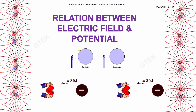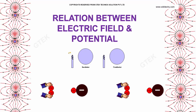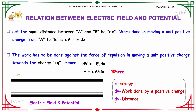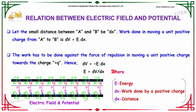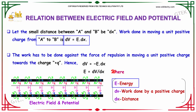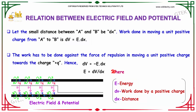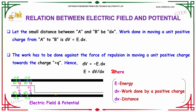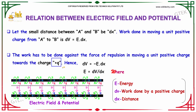Let's move on to the concept of the relation between electric field and its potential. Consider a small distance between A and B, defined as dx. The work done in moving a unit positive charge from A to B is defined as dV = E·dx, where dx indicates the distance and dV indicates the work done. You can see here how work has to be done against the force of repulsion in moving a unit positive charge towards the charge +q along the electric field.